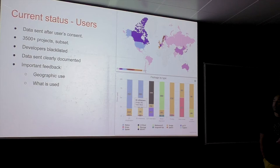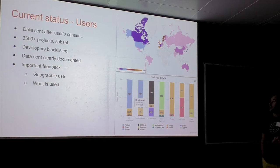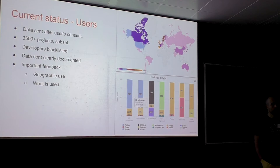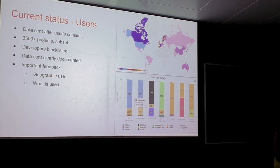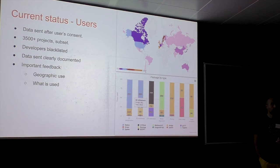The geographic use and usage type information is important because at some point we might decide to discontinue development of some method if it's never used. We can also plot usage by type — for example, 2D classification usage, with bar charts showing which method like Relion 2D classification is most used within Scipio. This data could also inform where it's worth providing training.